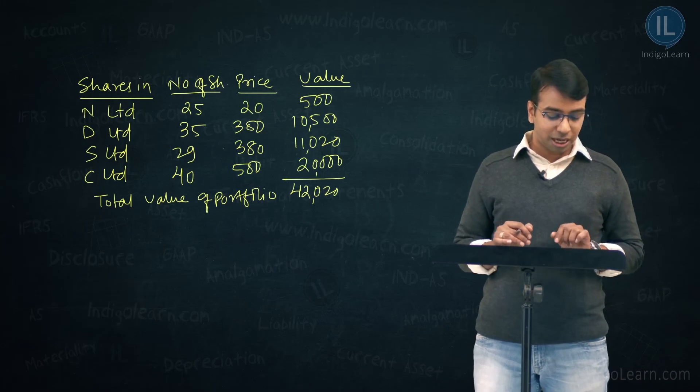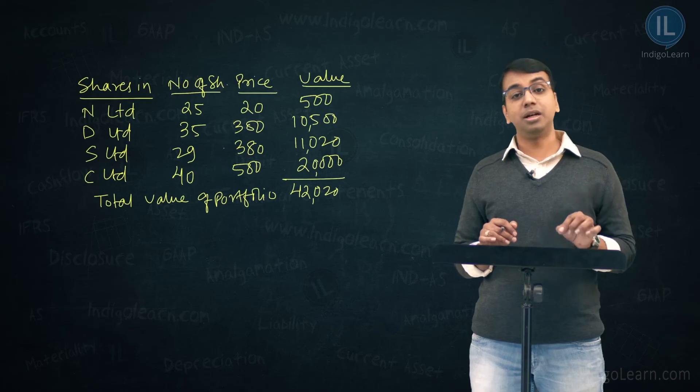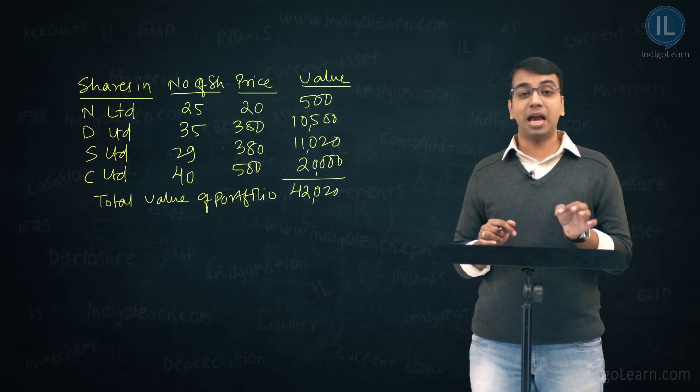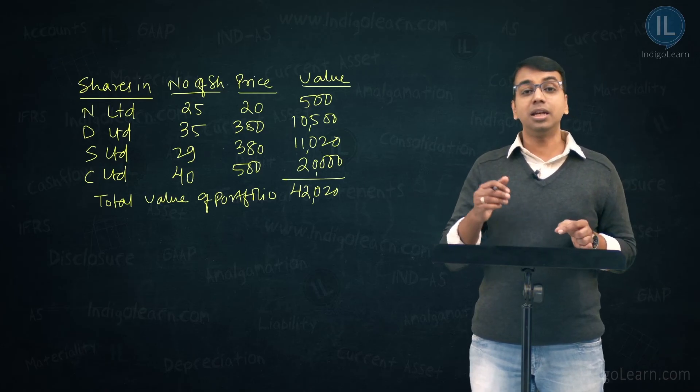And what are the liabilities? The liabilities given in the questionnaire, accrued expenses of ₹250 and other liabilities of ₹200. These are the liabilities which the mutual fund scheme have. Total assets less these two liabilities will give you the net assets.